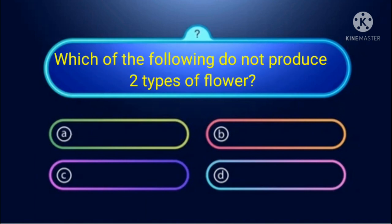Next question: Which of the following does not produce two types of flowers? That is, which plant does not produce both cleistogamous (completely closed) and chasmogamous (completely open) flowers? Options are: viola, oxalis, comelina, and hibiscus.